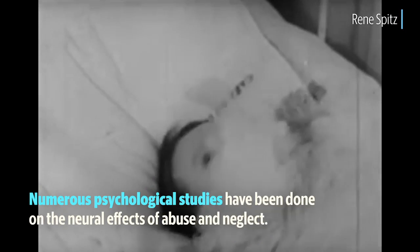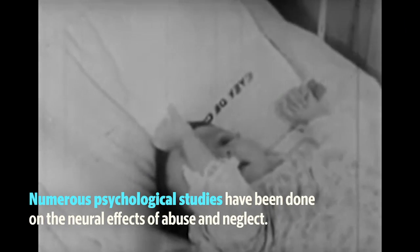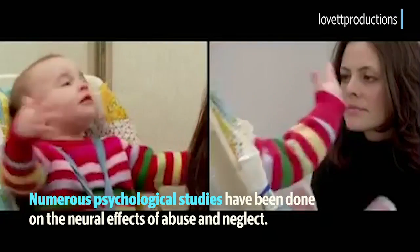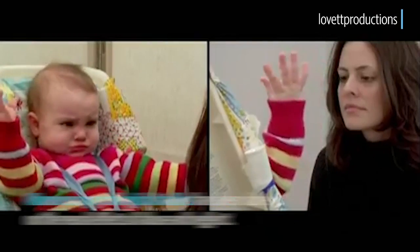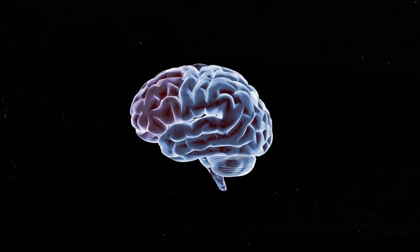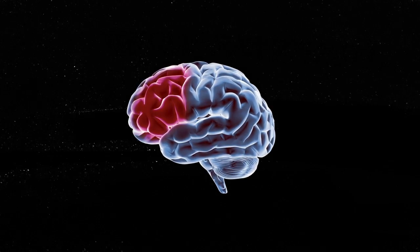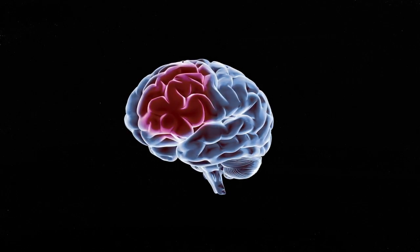There is still debate among scientists on how much damage is coming from abuse and neglect or multiple placements, but researchers say forcing a child to endure those placements can disrupt the neural connections in their frontal lobes.